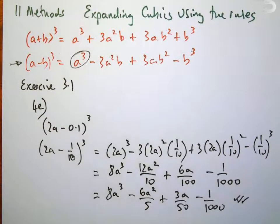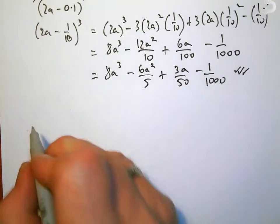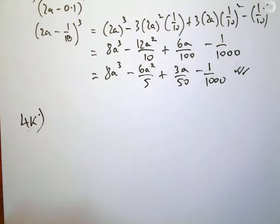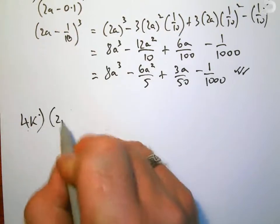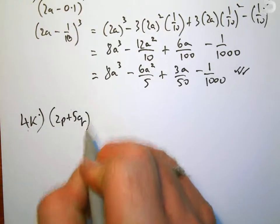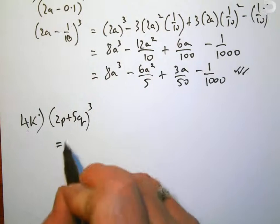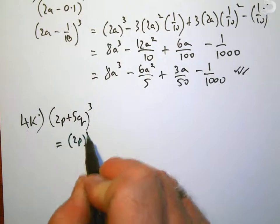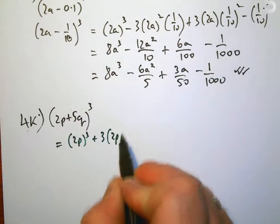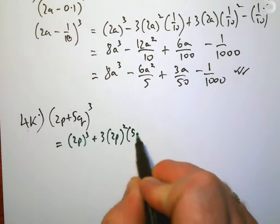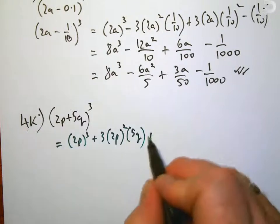OK, looking at example 4k, it's (2p + 5q)³, so I'm going to be using the top rule which was (a+b)³. That's going to equal (2p)³ + 3(2p)²(5q) + 3(2p)(5q)² + (5q)³.